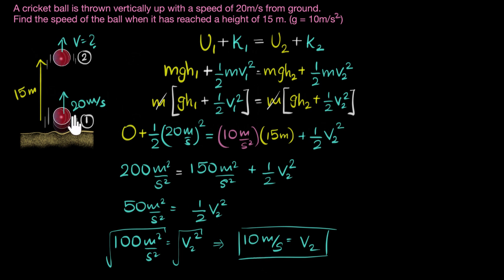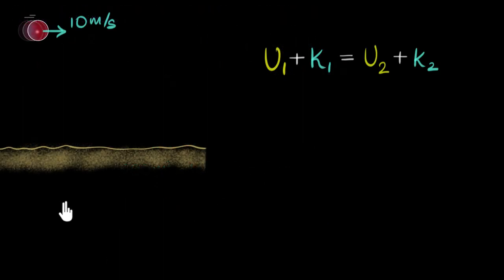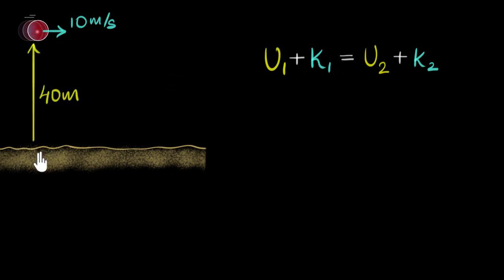When the ball reaches the height of 15 meters, its velocity is 10 meters per second — it has become slower, which is exactly what we would predict. Now let's solve one more. In this problem, we have a ball being thrown horizontally at 10 meters per second from a height of 40 meters from the ground.